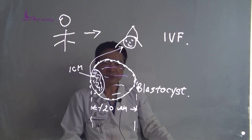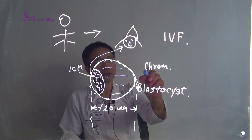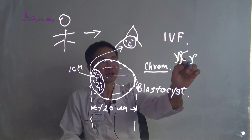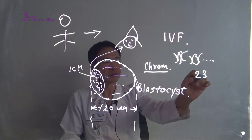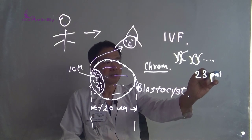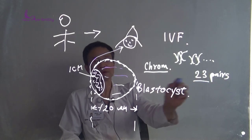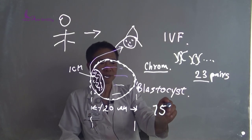And secondly, you can check the chromosome numbers. We know we have many chromosomes. We have 23 pairs. So if we have 23 chromosomes like that, this embryo should give 75% chance to make babies.